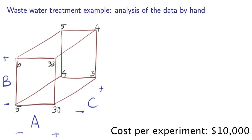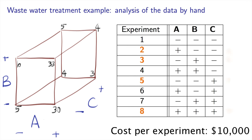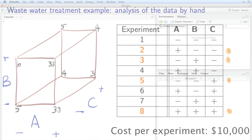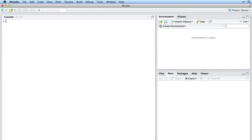Now assume that each of these experiments were very expensive. Maybe they cost around $10,000 each. So instead of doing 8, let's assume we've only done these 4, half the work. Our boss is going to be pretty impressed that we've saved $40,000. Open the software and let's see what happens.